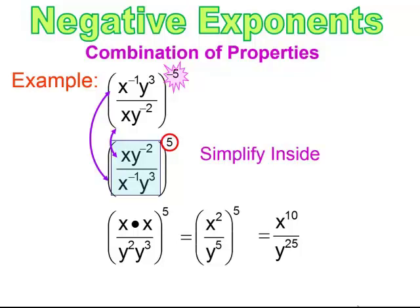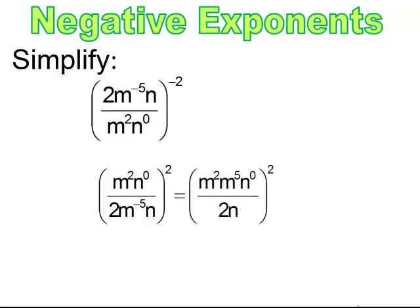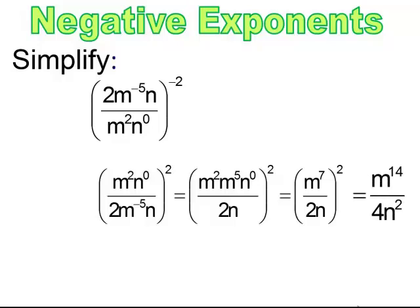I like to first flip the inside and change that negative power outside to positive, then simplify inside. Pause and try. Flip the inside exactly — the top goes to the bottom and the bottom goes to the top exactly as written — and change the outside power to positive. Simplify inside first: the n to the negative power is the only thing that needs to move. When I simplify, I end up with n to the 7th on top. Remember, n to the 0 power is simply 1. And 2 times n. Now take that power on the outside and give it to everything inside — don't forget the numerical part. You end up getting m to the 14th all over 4m squared.